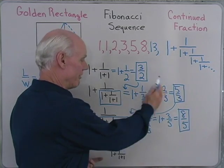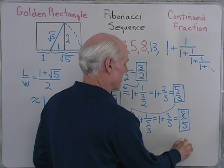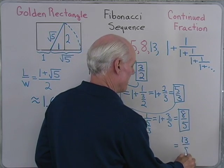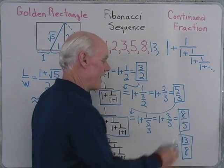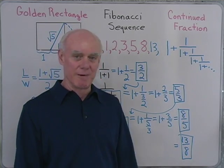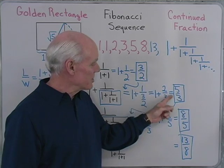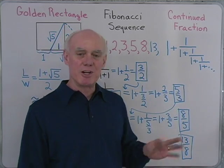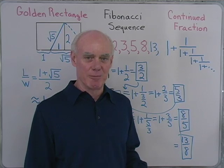Well, this one, if it follows this pattern, is going to come out to be 13 eighths. And in fact, that's exactly what happens. This comes out to be 13 eighths. You can simplify this if you want to, but that's what you get. So as we travel down this sequence right here, we see we get ratios of consecutive Fibonacci numbers.